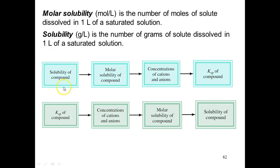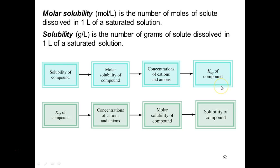You might be given the solubility of a compound in grams per liter, then have to solve for the molar solubility, and from the molar solubility figure out the concentrations of cations and anions. In some examples, one mole of the ionic salt doesn't lead to exactly one cation and one anion — it could lead to more. From the concentrations of cations and anions, you would calculate the solubility product. You can also work in reverse: from Ksp to concentrations to molar solubility to grams per liter.